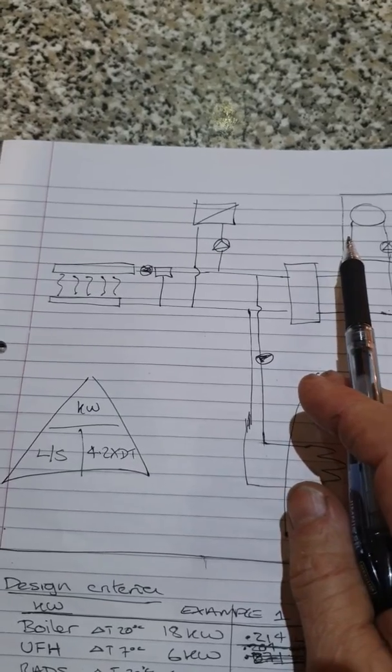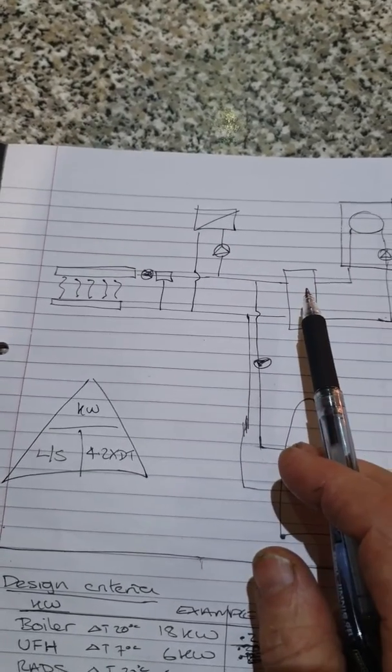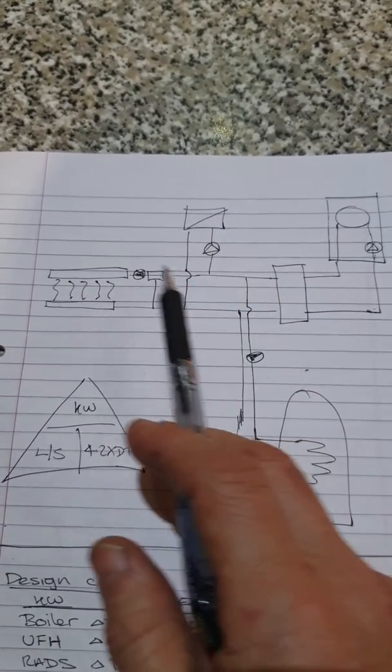The long-term fix is to put in hydraulic separation and let the boiler run at lower temperature, curing the flow rate problem through the low loss header.